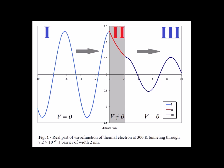In figure 1, the particle in question is an electron that has the average kinetic energy of a particle at 300 degrees Kelvin. The barrier has a width of 2 nanometers, and the potential is 7.2 times 10 to the minus 21 joules.